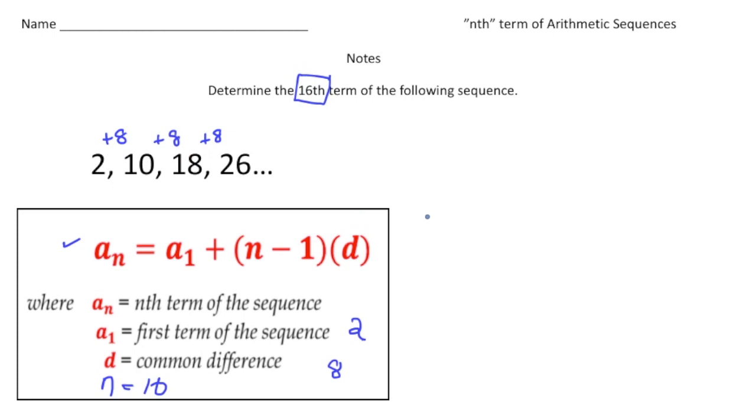Let's plug in the values. a sub n is going to equal our first term, which is 2, plus n minus 1 - so n is going to be 16 because that's what we're trying to figure out - so 16 minus 1, times d. And now the d is the common difference, which is 8, so times 8.